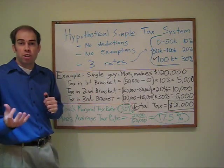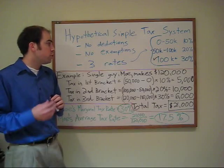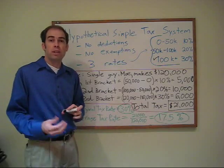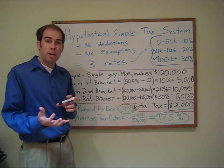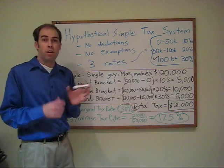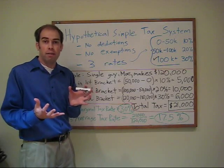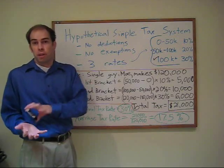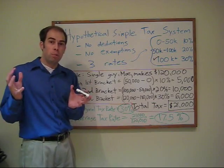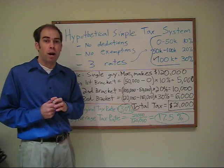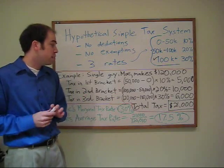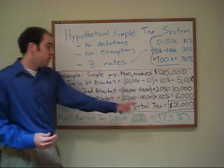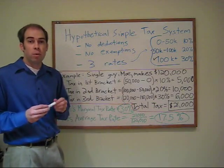Because we have a progressive rate structure and marginal tax rates get higher as income goes higher, the average tax rate for somebody will increase as their income goes up. It's the same analogy as if your current GPA is 3.5 and you get a B — the marginal rate is a B — your GPA falls. But if you get an A, which is a 4.0, your GPA would go up from 3.5 to say 3.6. If the marginal rate exceeds the average rate, your average tax rate will go up.